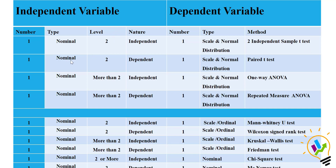If the independent variable is nominal with two levels but those levels are dependent — like a pre-test and post-test — then you must use a paired t-test. If the independent variable has more than two levels and they are independent, then you must use one-way ANOVA. If the independent variable has more than two levels and they are dependent, then you must use repeated measures ANOVA.